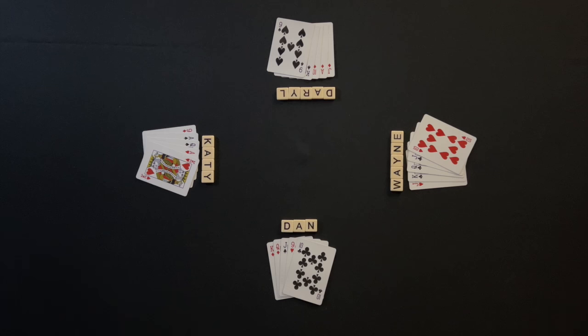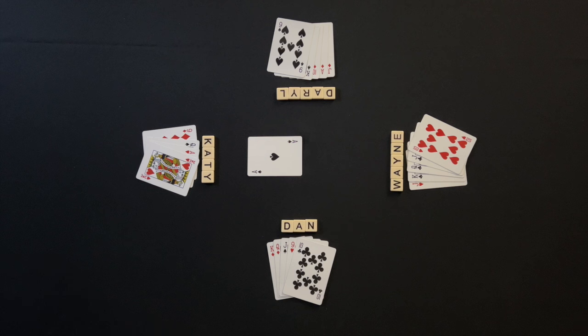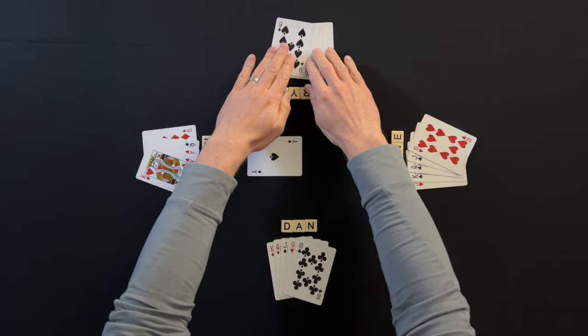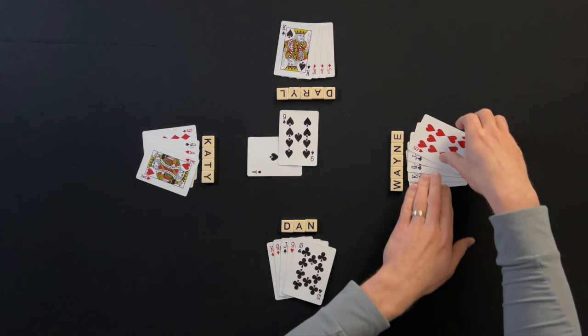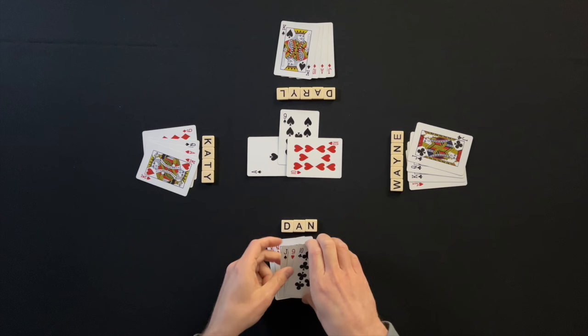The player left of the dealer leads the first card to the first trick. Katie leads the Ace of Spades. Play moves left to Daryl. Players must play a card in the same suit of the card that was led if possible. Daryl follows the lead suit by playing the Nine of Spades. Play moves to Wayne who does not have a spade to follow suit. If a player cannot follow the lead suit, they can play any card. Wayne plays the Ten of Hearts. Play moves to Dan who follows the lead suit by playing the Jack of Spades.